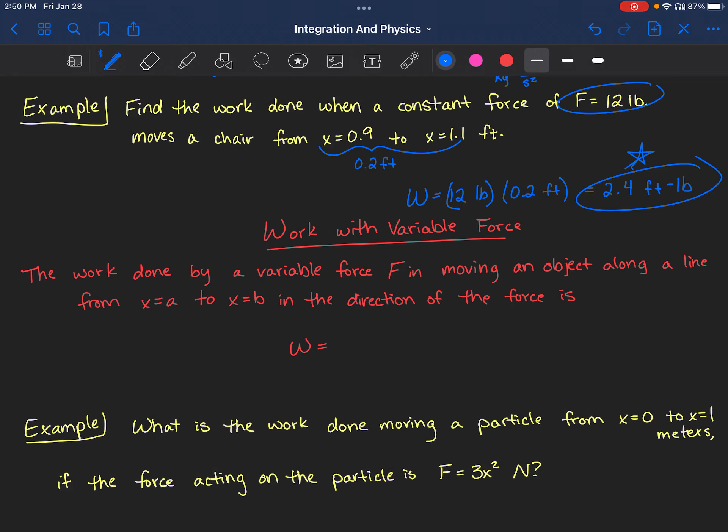The work done by a variable force F in moving an object along a line from x=a to x=b in the direction of the force is given by the integral from a to b of F(x)dx. Those are my x values representing distance. If we're starting at a and ending at b, I can divide this section up into infinitely small chunks that are all a distance of dx.